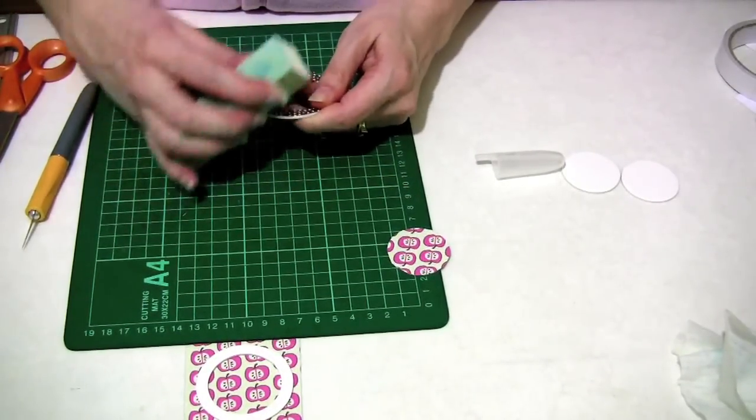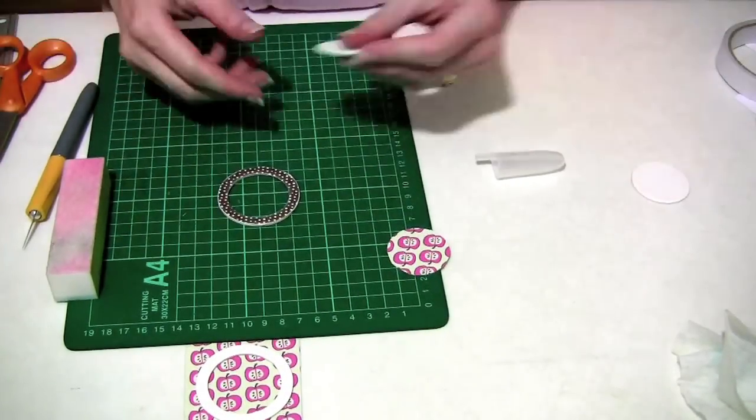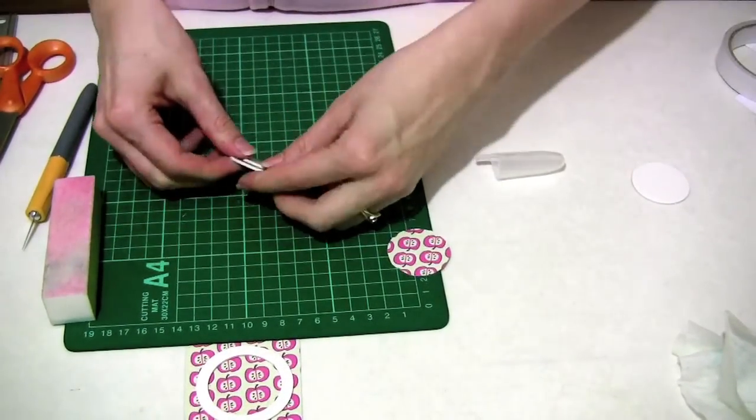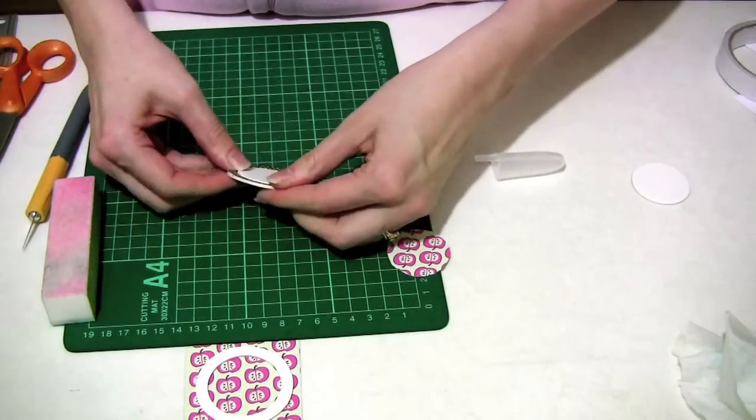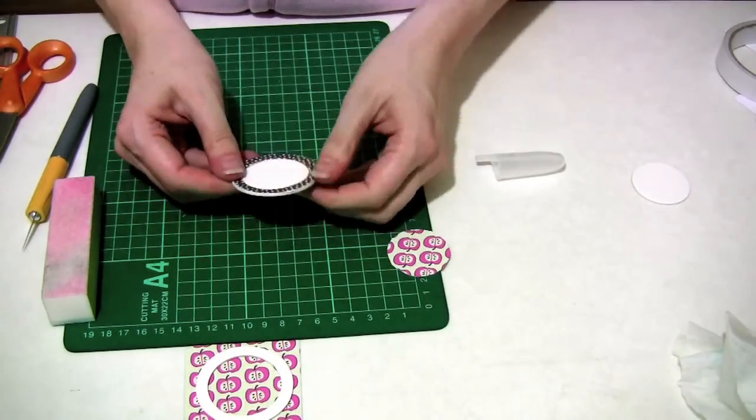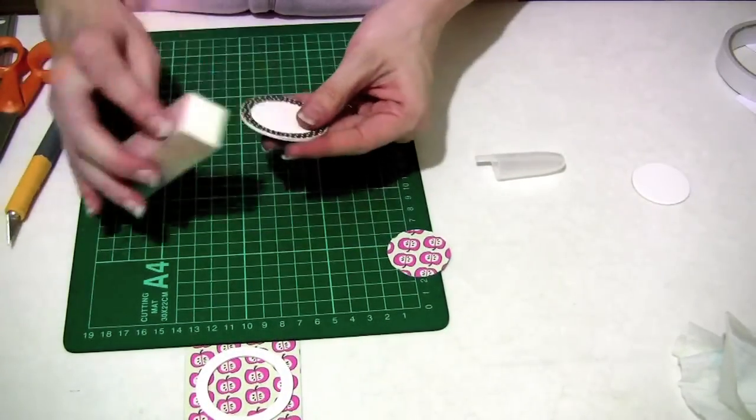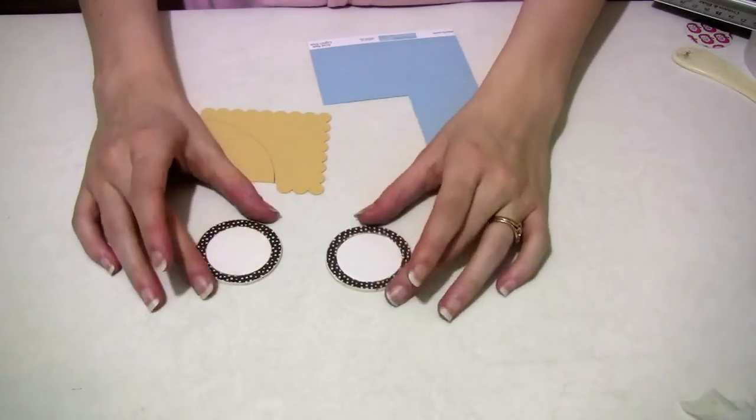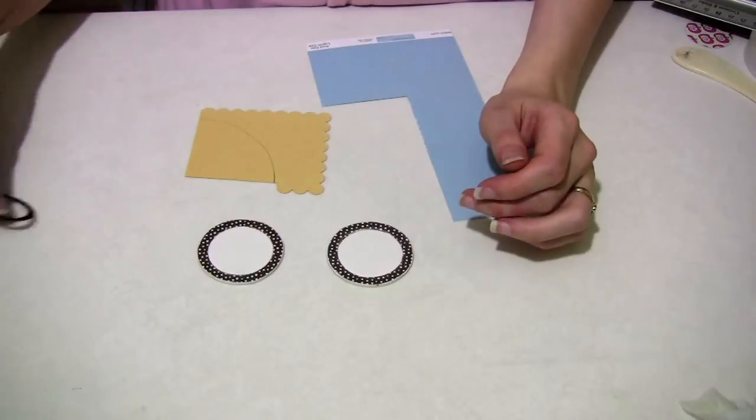I'm going to use my sanding block to sand that down. I'm taking my solid circle, I'm popping that right back in the middle, that's where I want my wheels to be. Then what I'll do is I'll put a little design on the inside of each of the wheels like here.